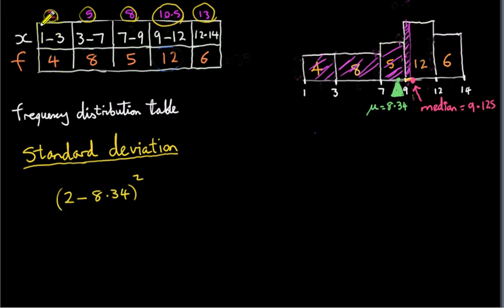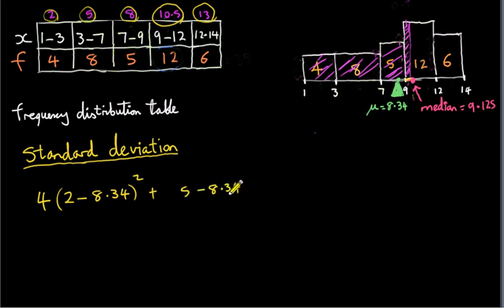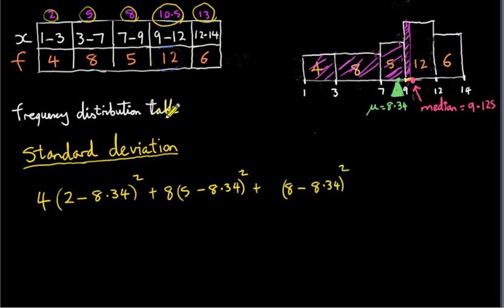We don't just have one x value of 2 — we have four of them, so we multiply the squared deviation by 4. We add up all the squared deviations this way. For the next x value, x = 5: the deviation is 5 minus 8.34, squared, and we have 8 of those values, so we multiply by 8. For x = 8: it's 8 minus the mean, squared, multiplied by the frequency of 5.